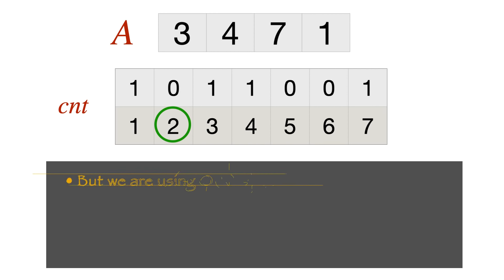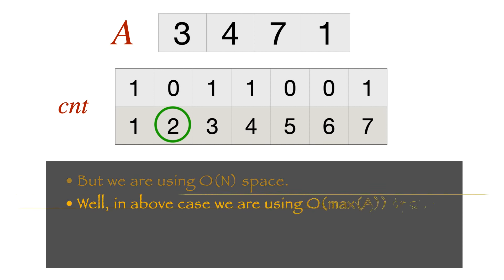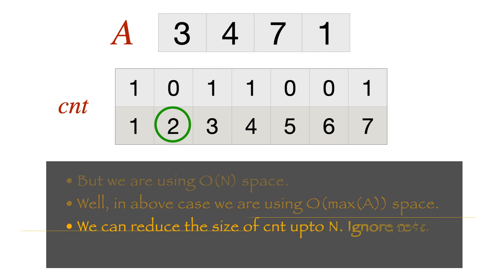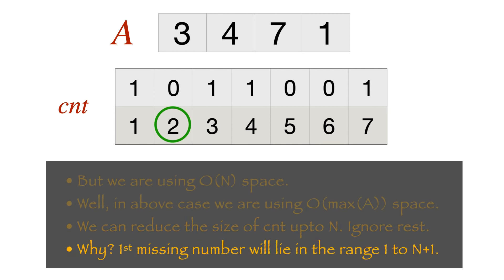This count array approach works but uses extra space — O(n) space, same as hash maps. You might observe it actually uses O(max of array) space; here the array has four elements but we need a count array of size seven. However, you can reduce this to O(n) because the first missing positive always lies in the range one to n+1. Even so, it's still O(n) space, which doesn't satisfy the problem's requirement.